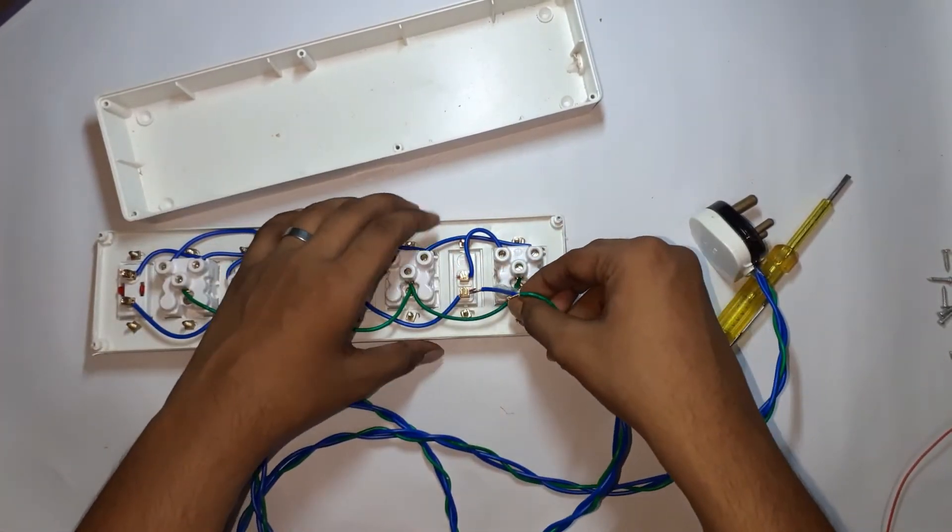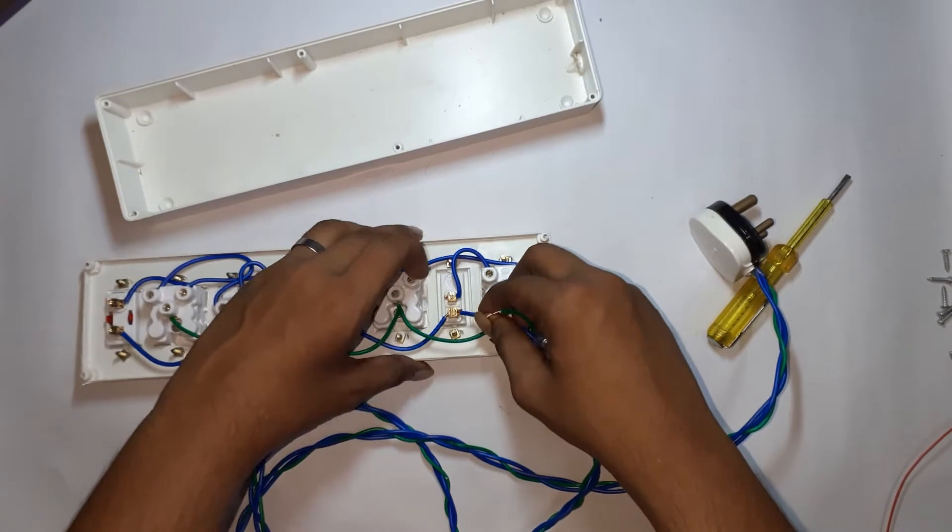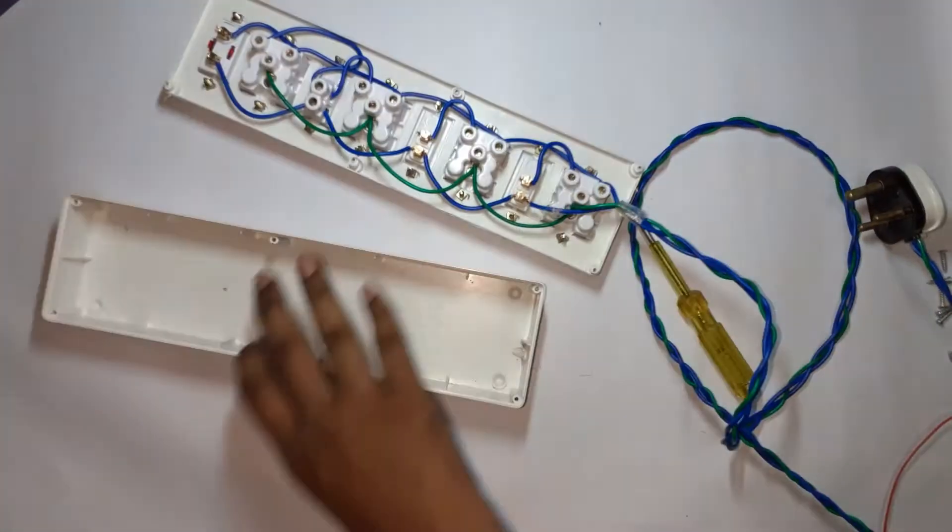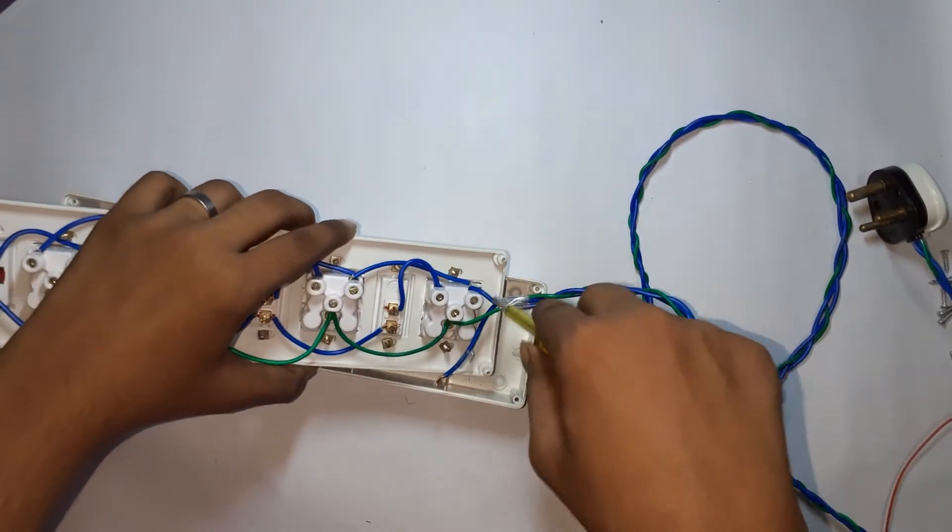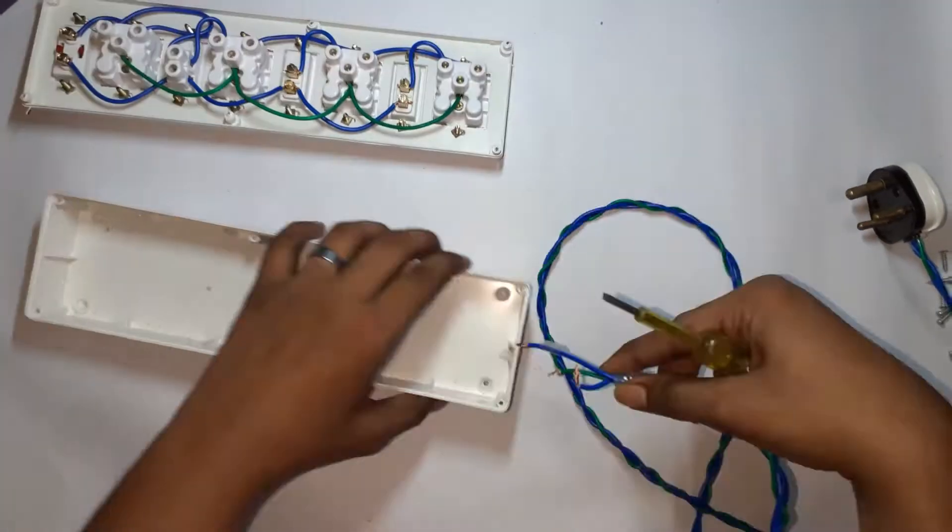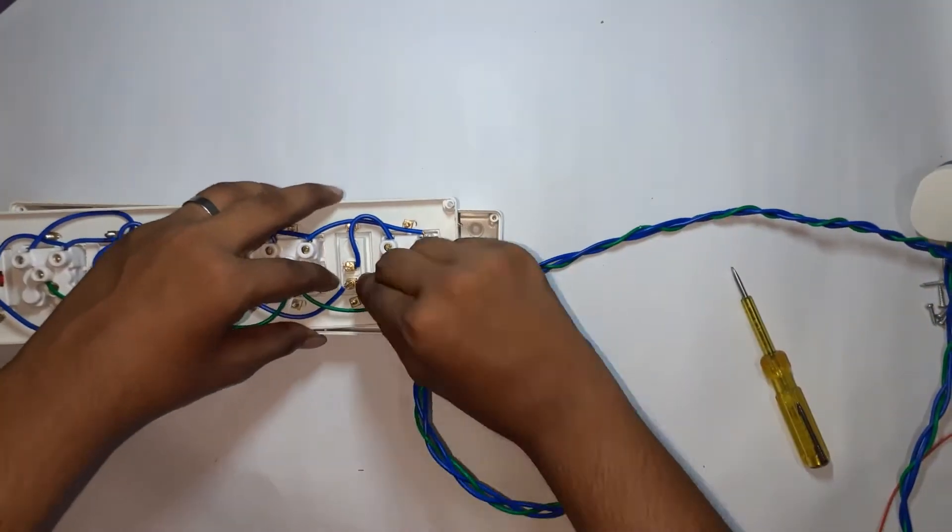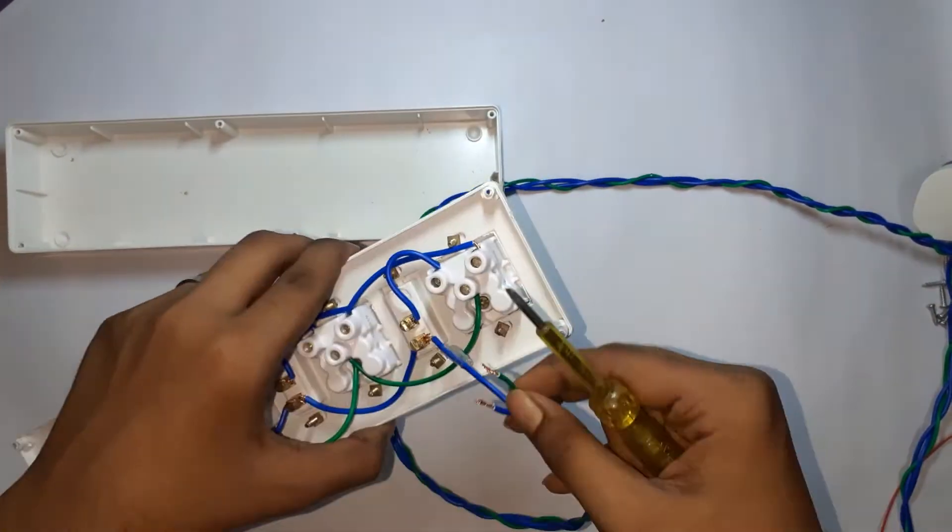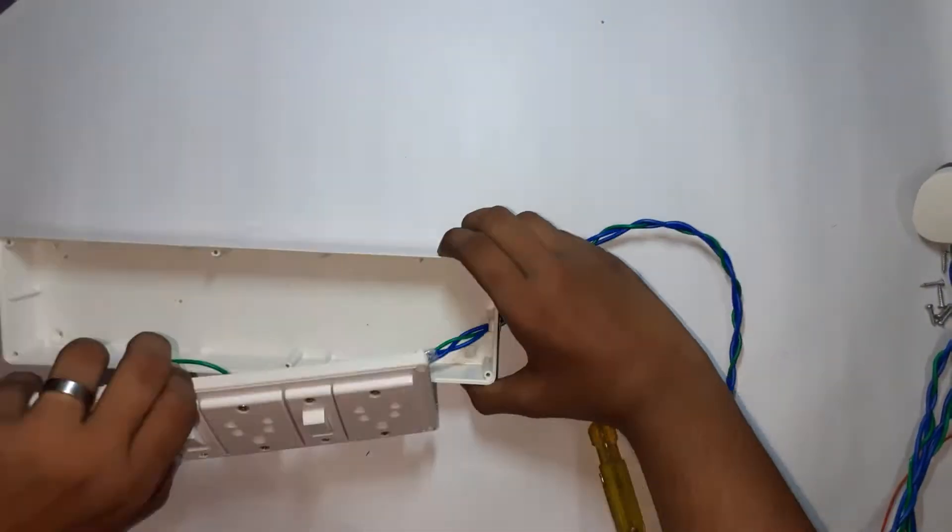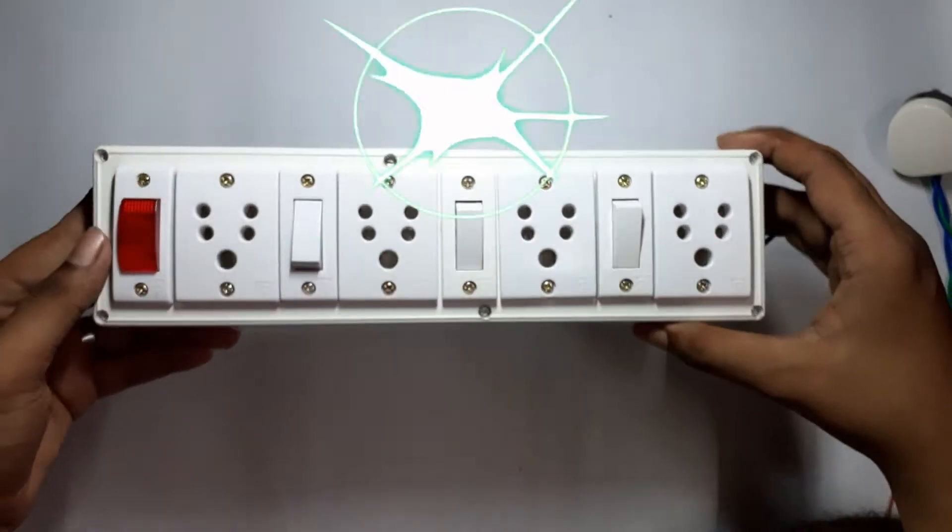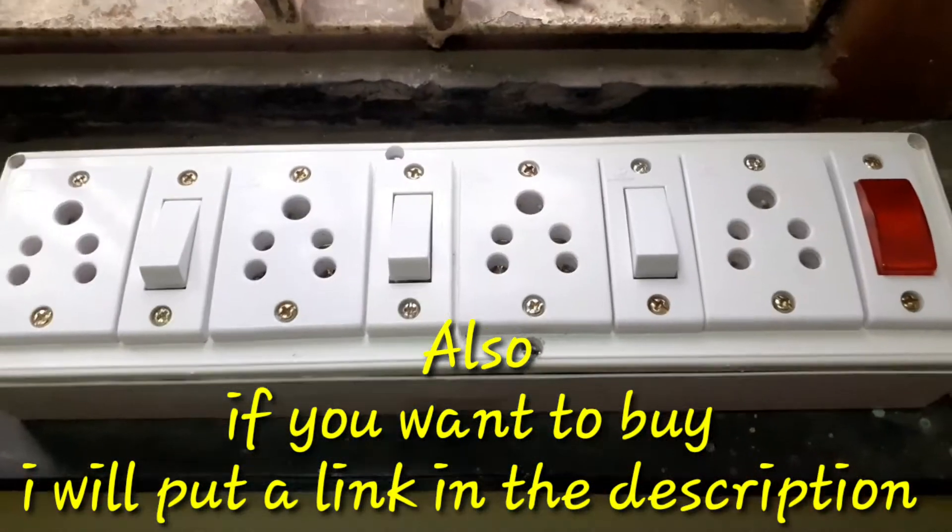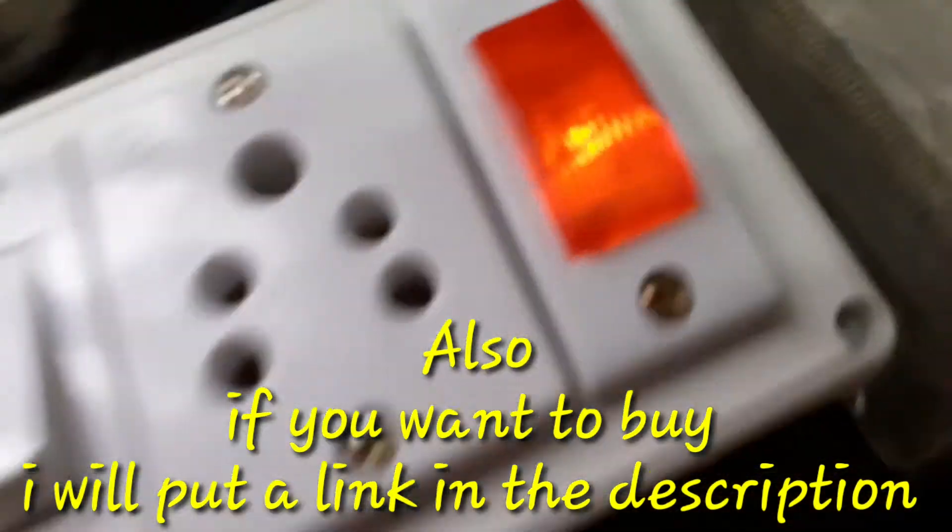Now we will connect the main line to the extension board. Don't forget to pass the wires through the hole of the box before connecting them to the switch. As you can see, the indicator glows up as I turn on the switch.